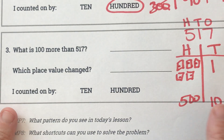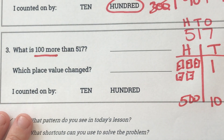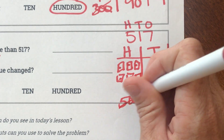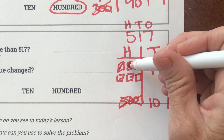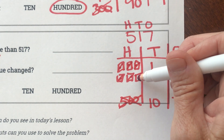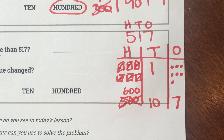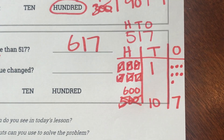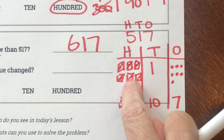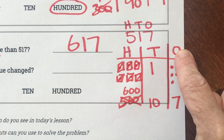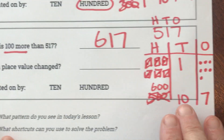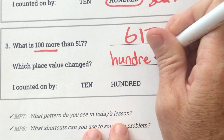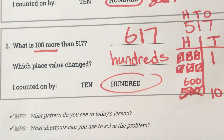My question says: what is 100 more? They want us to add another 100. So let's add another 100 over here. What did it change to? 100, 200, 300, 400, 500, 600. So now I have 600 plus 10 plus 7, which is 617. I changed the 100's place and counted on by 100.